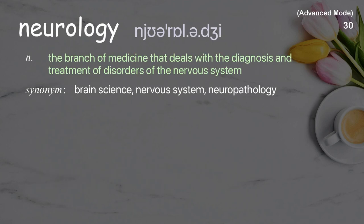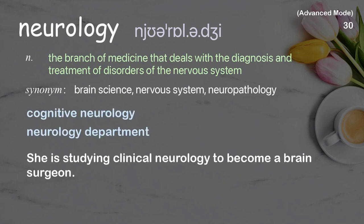Neurology: the branch of medicine that deals with the diagnosis and treatment of disorders of the nervous system. Examples: cognitive neurology, neurology department. She is studying clinical neurology to become a brain surgeon.